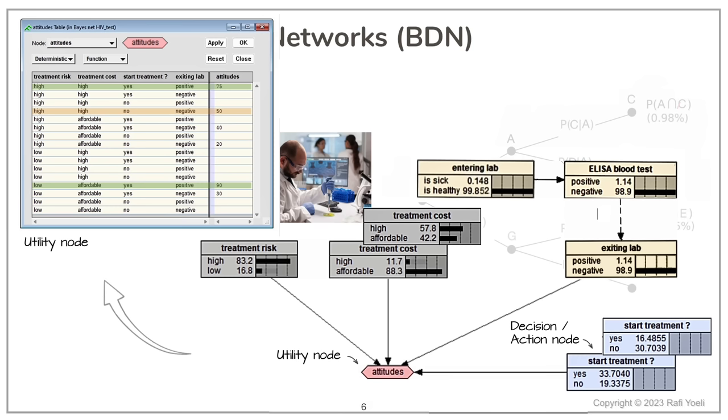From the discussion so far it becomes clear that Bayesian decision networks combine two parts. The first is the belief network part, which is the scientific component, capturing the world, its states, and their relative likelihoods.